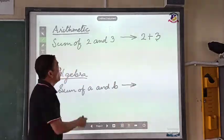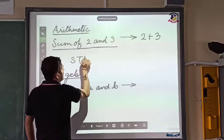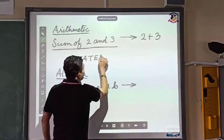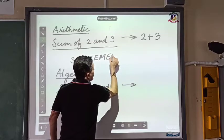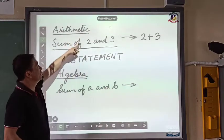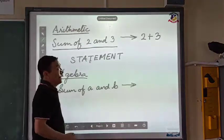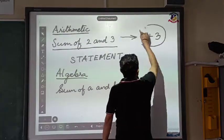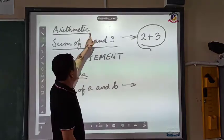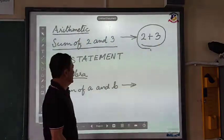Now, what is given in words is called a statement — so that's called a statement. We can consider this to be an arithmetic statement, and what we write in signs, symbols, and numbers can be termed as the arithmetic form.